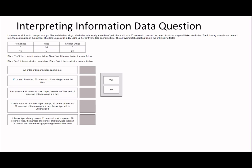So Lisa uses an air fryer to cook pork chops, fries and chicken wings which she sells locally. An order of pork chops takes 20 minutes and an order of chicken wings takes 10 minutes. The table shows combinations of orders Lisa sold in a day using up her air fryer's total operating time - the only limiting factor. What we're trying to find is that total operating time.